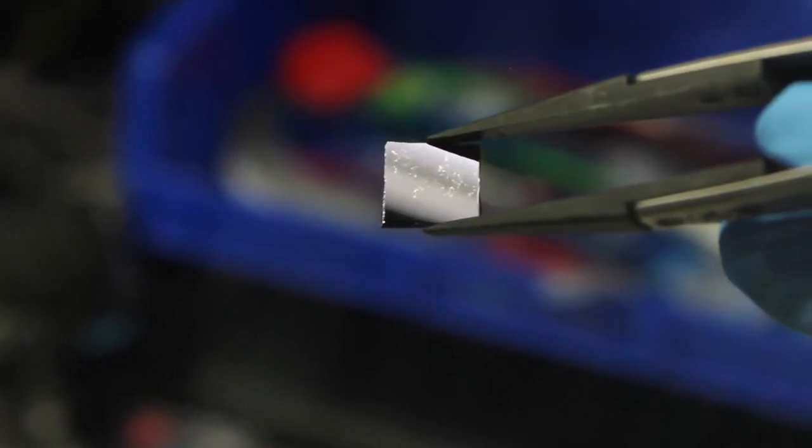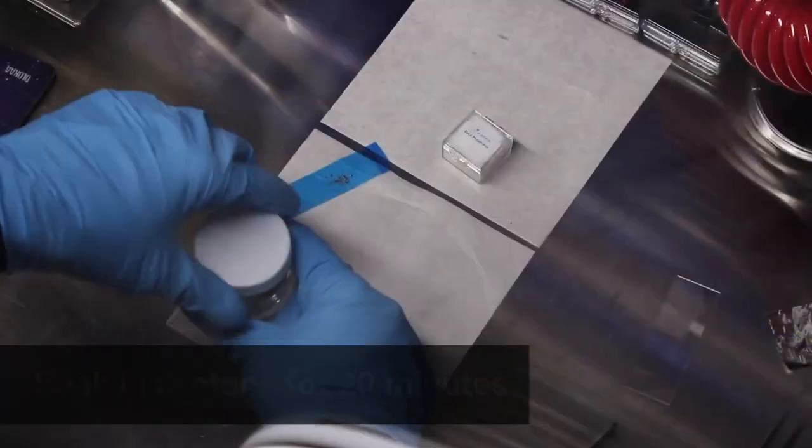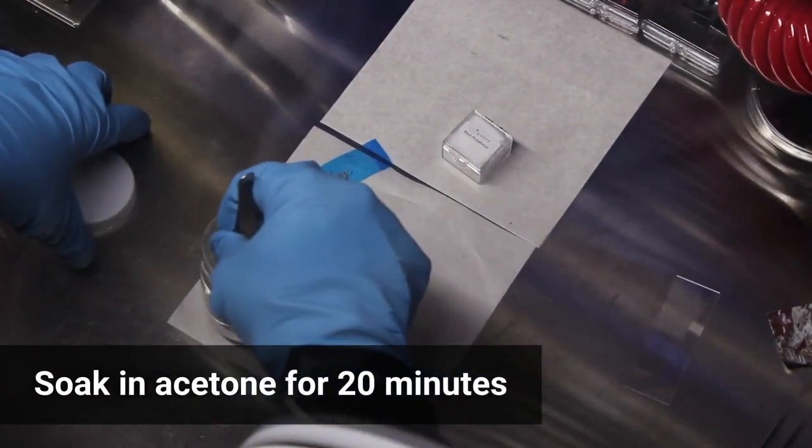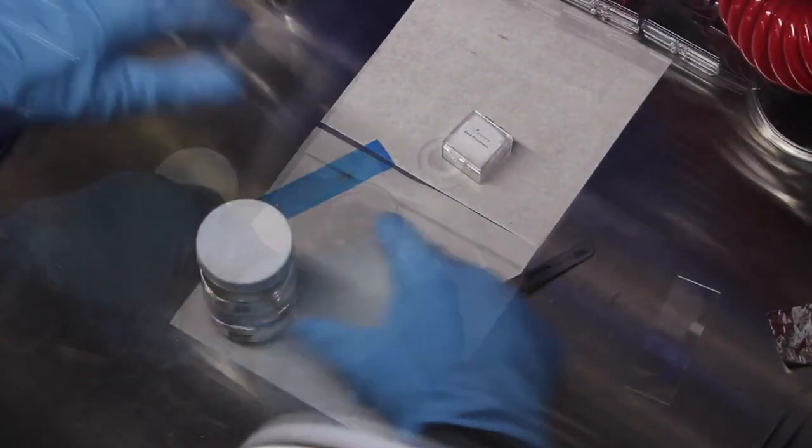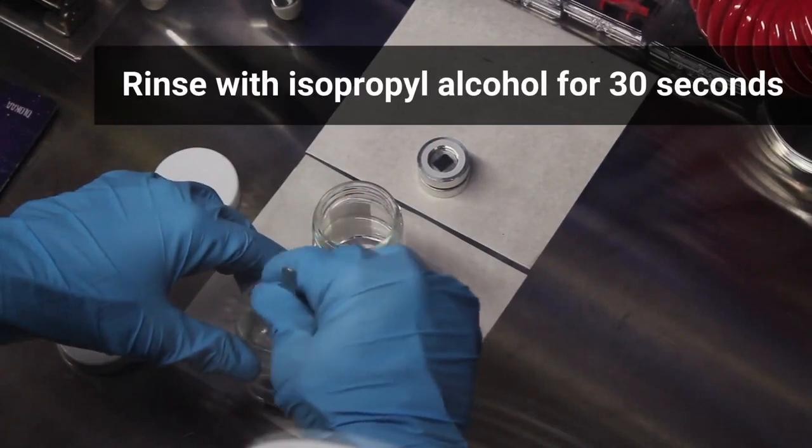Hot exfoliation will leave more tape residue than room temperature exfoliation, but most of the residue can be removed by soaking in acetone for 20 minutes, followed by 30 seconds in isopropyl alcohol.